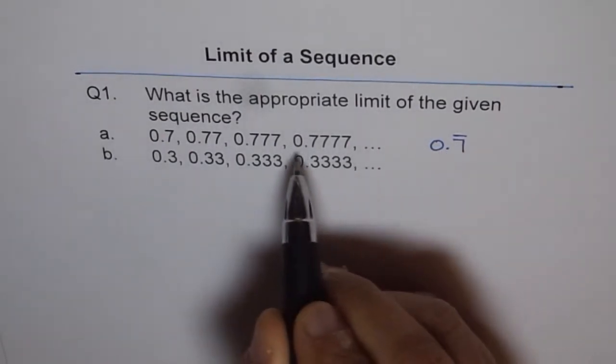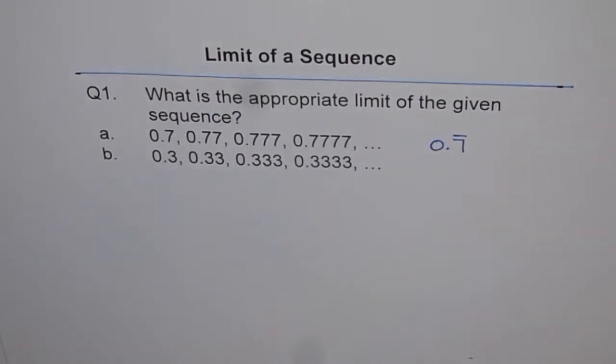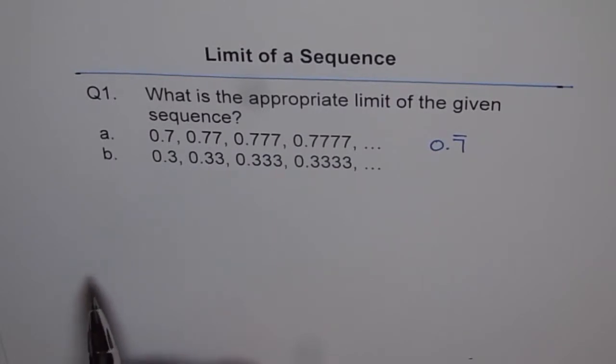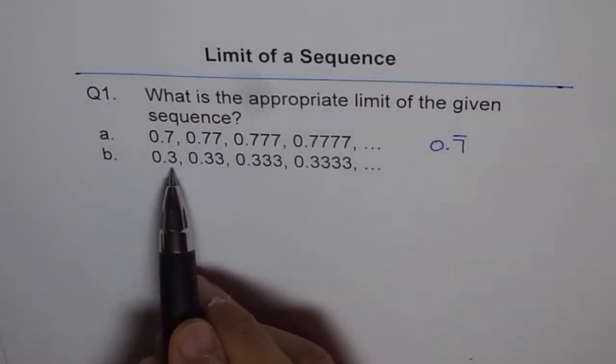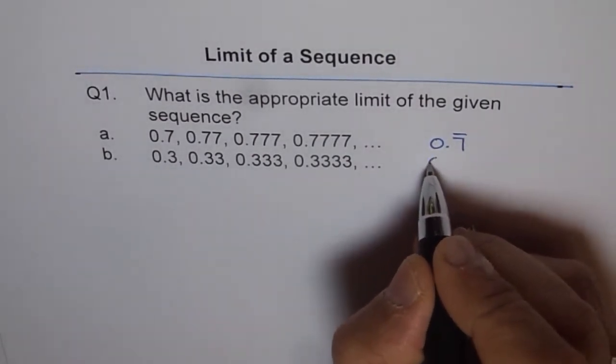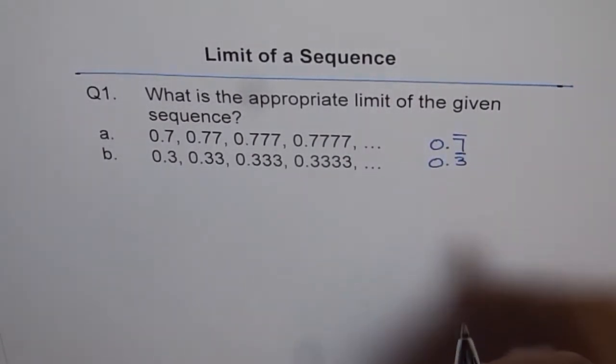So 0.7 recurring is 0.7777 and so on. Similarly, sequence b is 0.3, 0.33, and so on. That could be written as 0.3 recurring.